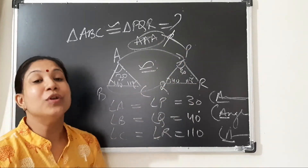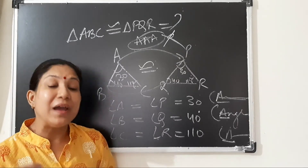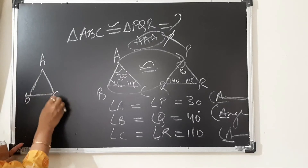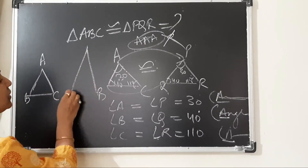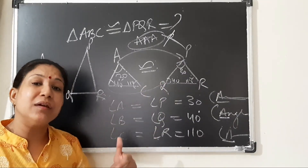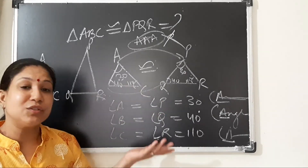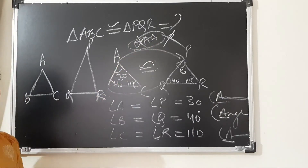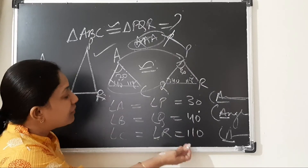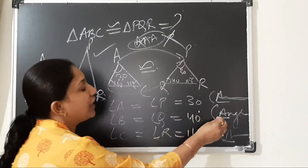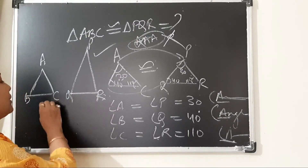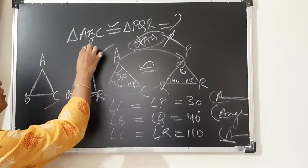The answer is no. We do not have any such congruence criteria as AAA. Even if all three angle measurements are the same — 30°, 40°, and 110° — the size of the triangle may vary. The angles can remain equal but the sides can be different, making the triangles similar but not necessarily congruent. That is why we use two angles and one side, or two sides and one angle, or all three sides, or the RHS criteria — but there is no AAA congruence rule.